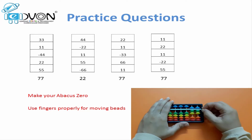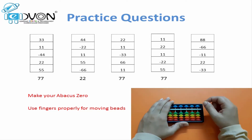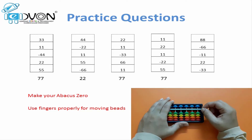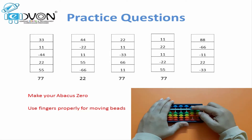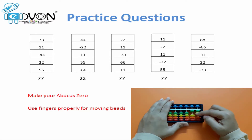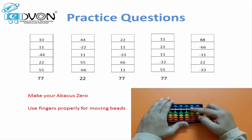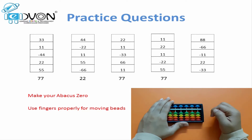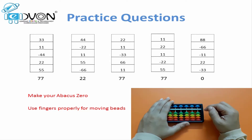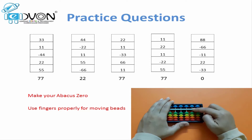Let's take another question: 88 minus 66 minus 11 plus 22 minus 33. Answer is 0, as no single bead is touching the calculation bar.